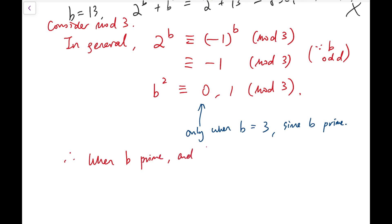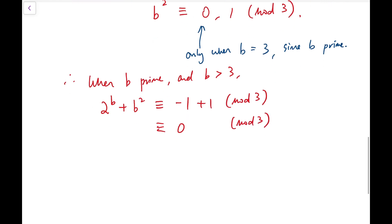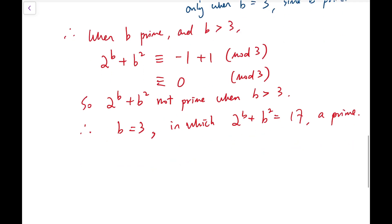Now that means when B prime and B is larger than 3, 2 to the power of B plus B squared must be congruent to minus 1 plus 1 mod 3. And that's 0 mod 3. So that means it's a multiple of 3. And of course, it's larger than 3. So therefore, this expression is not prime when B is larger than 3. Therefore, B can only be 3. And at this time, it will be 17 a prime.